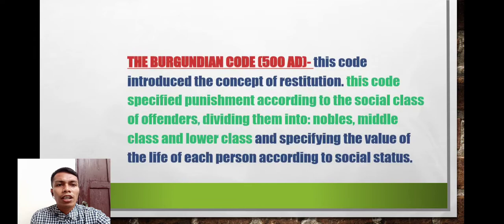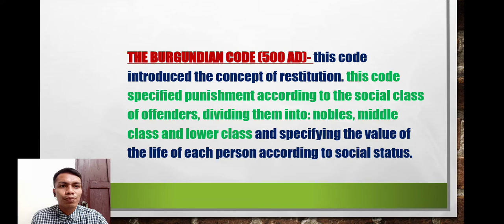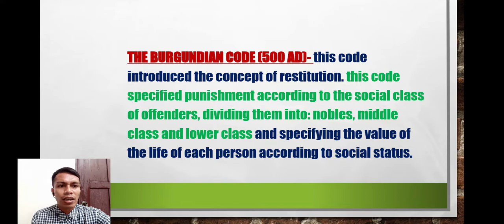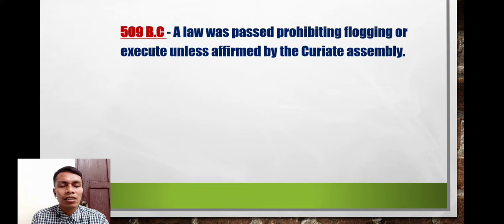The Burgundian Code of 500 AD introduced the concept of restitution. This code specified punishment according to the social class of offenders, dividing them into nobles, middle class, and lower class, and specifying the value of the life of each person according to social status. This is where the separation of inmates or offenders by class began.